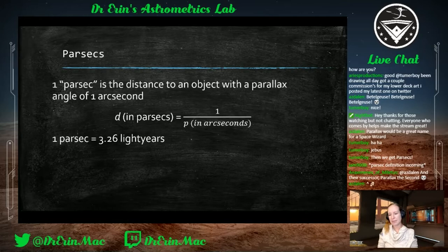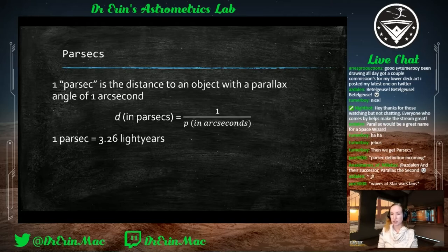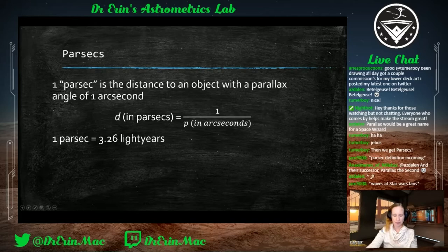Parsecs aren't used as much as light years in general, but you'll see parsecs used more in observational stellar astronomy — people using telescopes to do optical observations of nearby stars. For the most part we use light years, but they can be interchanged with the appropriate conversion.